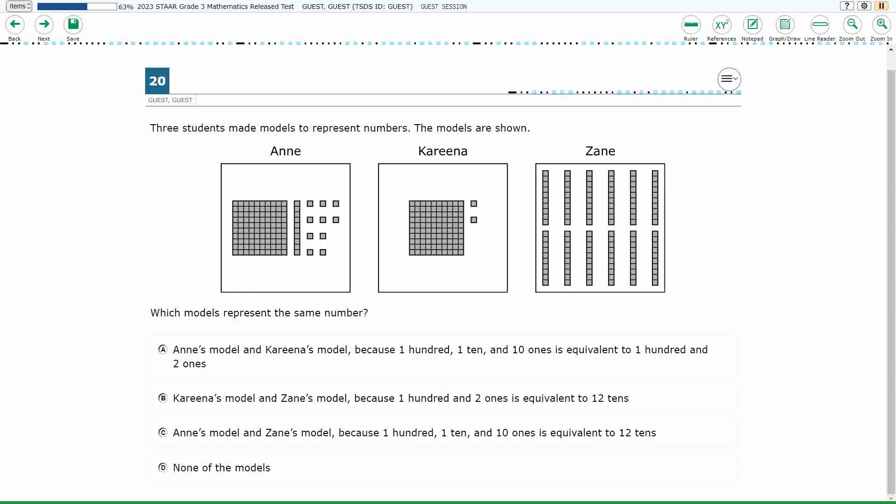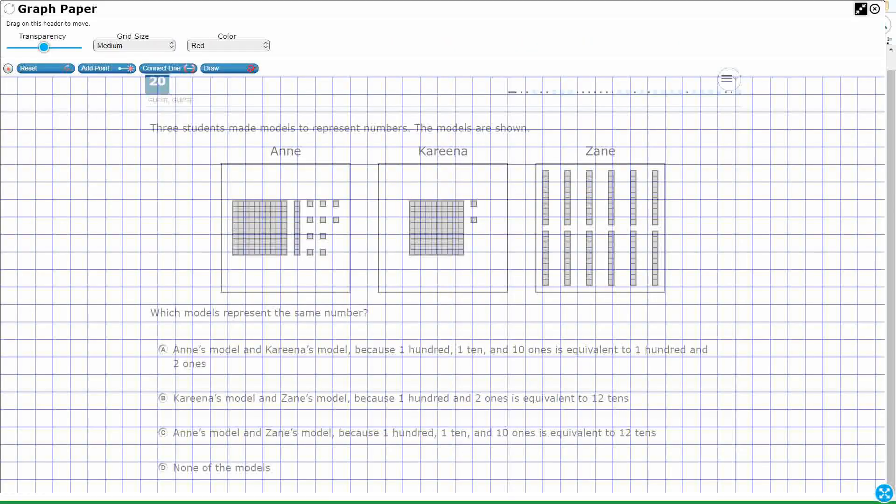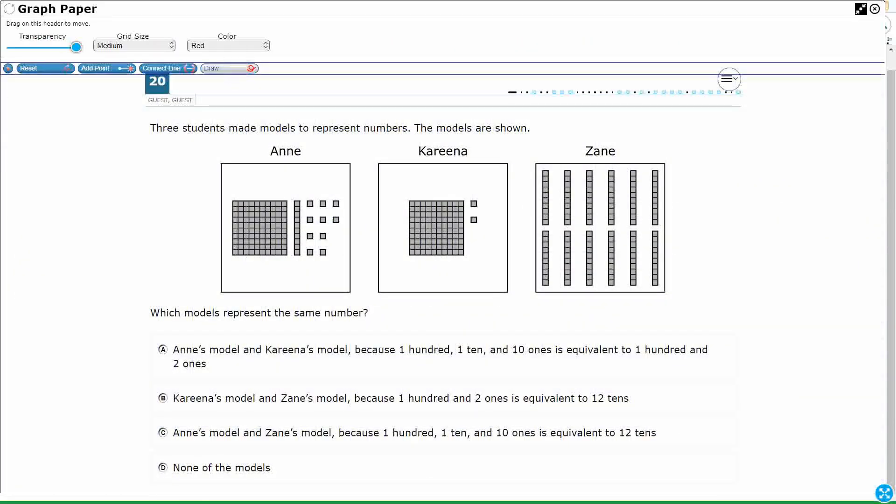All right, so we've got three students making models to represent numbers, and which models represent the same number. Let's figure out which numbers we have here. We've got some place value blocks, so let's put a little key over here to make sure we understand - we get these big giant flats.